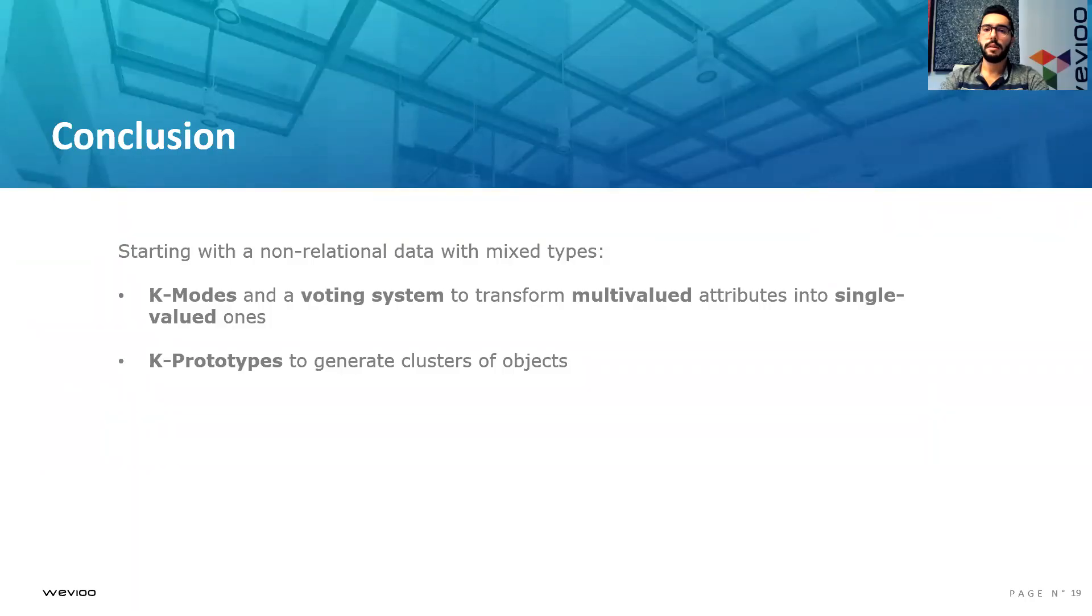To summarize the process of our method, if we start with non-relational data with mixed types, we can apply K-modes and a voting system to transform the multivalued attributes into single-valued ones. Then, we can apply K-prototypes to generate clusters of objects.